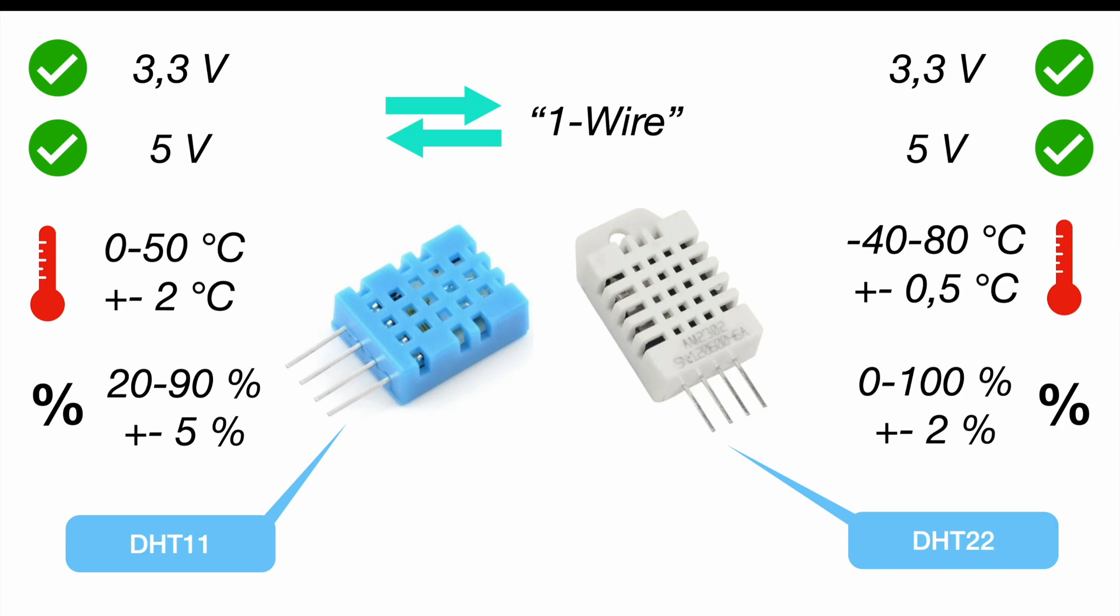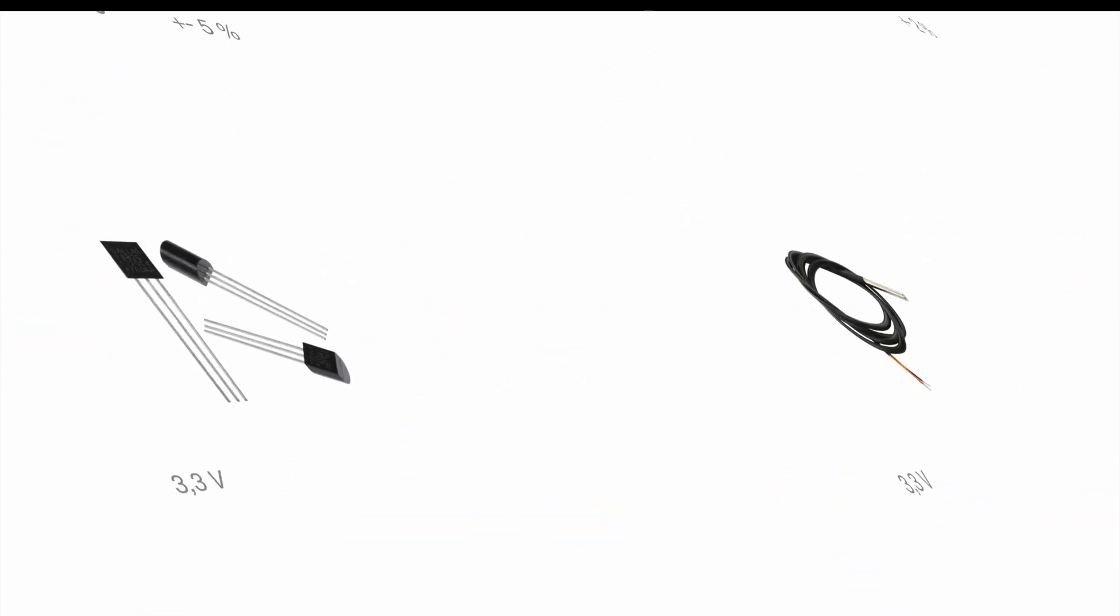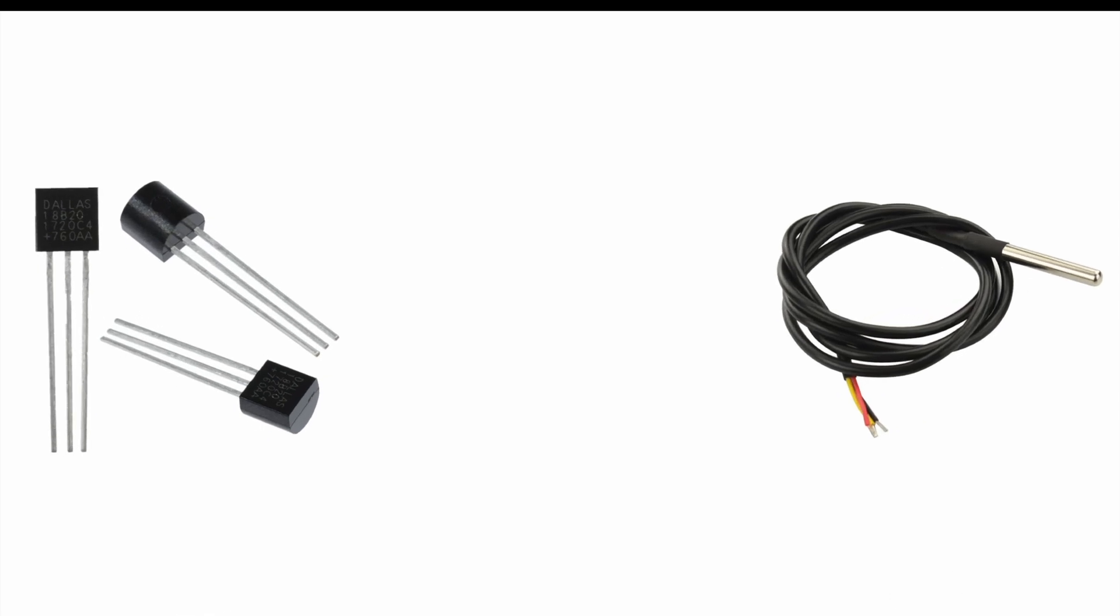And in case you wonder why there are four pins for one-wire protocol that's actually because one of the pins is not used at all. It's just there but it has no function at all. So that's also kind of strange. But let's move on to the next sensor which is the DS18B20.